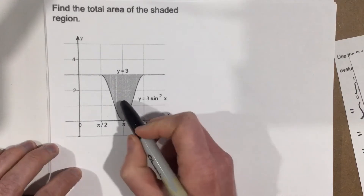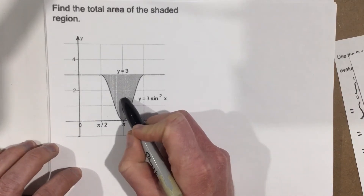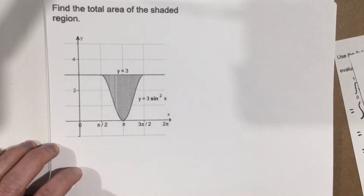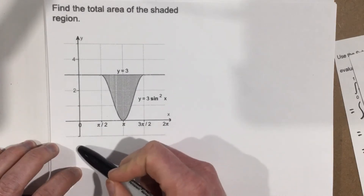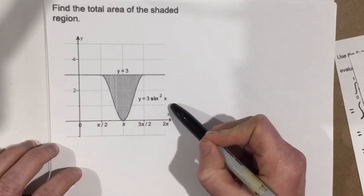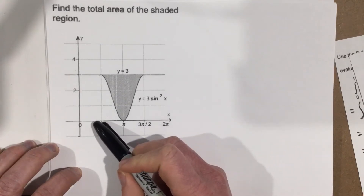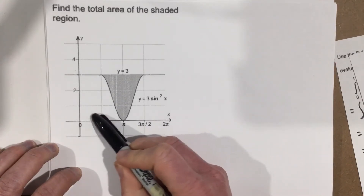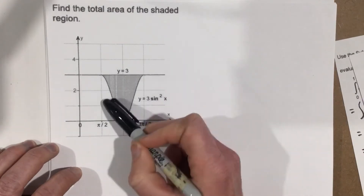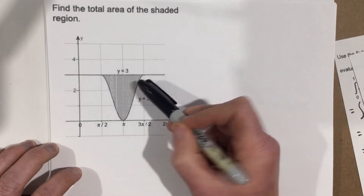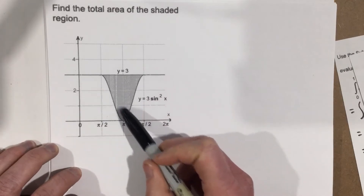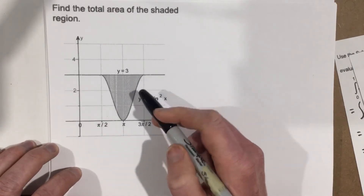This is a little bit different problem than what we've been dealing with. What we've been dealing with is functions that are crossing the x-axis, and we're finding the area from the x-axis to that curve. Now we have two different curves — if you want to call a straight line a curve, technically they do — and now we're trying to find the area between two different curves.